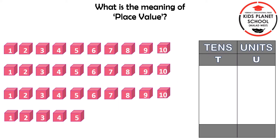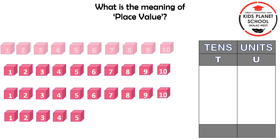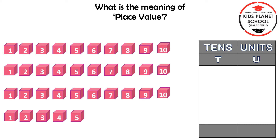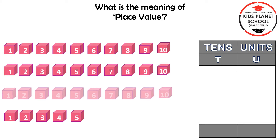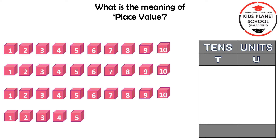Children, on the left-hand side, can you see the blocks? In the first row, there are 10 blocks. Also, in the second and third row, there are 10 blocks each. And in the fourth row, there are 5 blocks. So, to find the number of tens and units, let us group these blocks in bundles of 10.